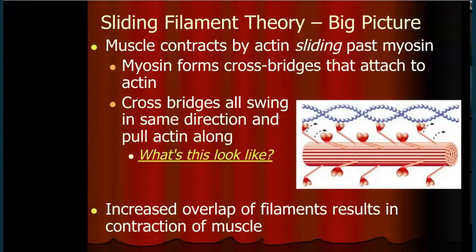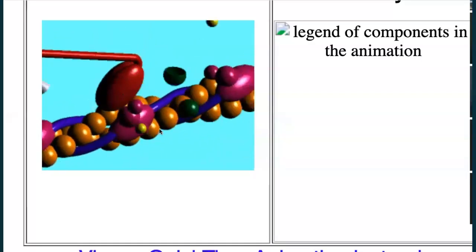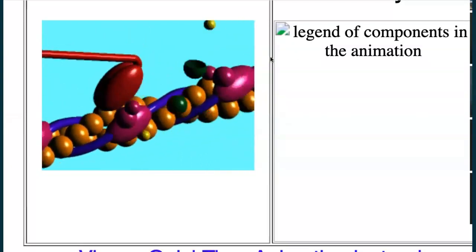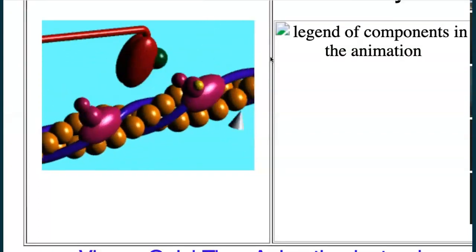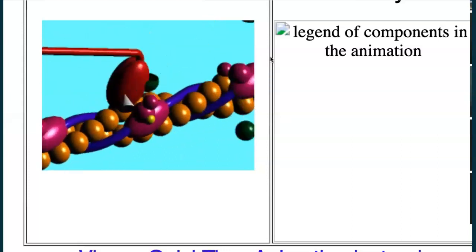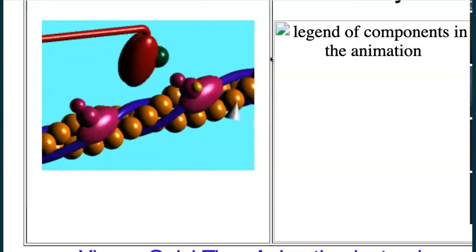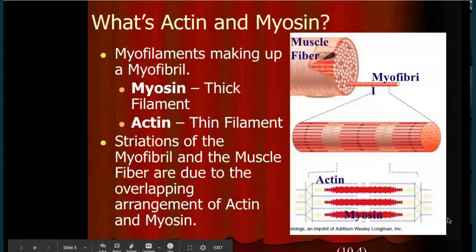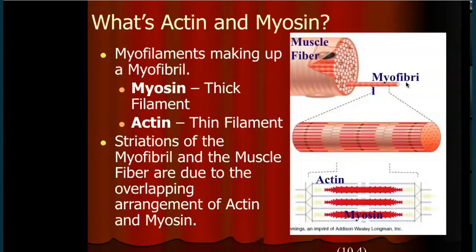That's called the power stroke. In this animation you can see the myosin binding head grabbing the actin fiber — just grabbing and pulling, grabbing and pulling — causing the actin filament to slide. Thus: the sliding filament theory. The more overlap, the shorter the muscle gets. The muscle fiber is made up of a fibril, and that fibril is made up of thick filaments (myosin) and thin filaments (actin). This is what creates the striations on skeletal muscle.